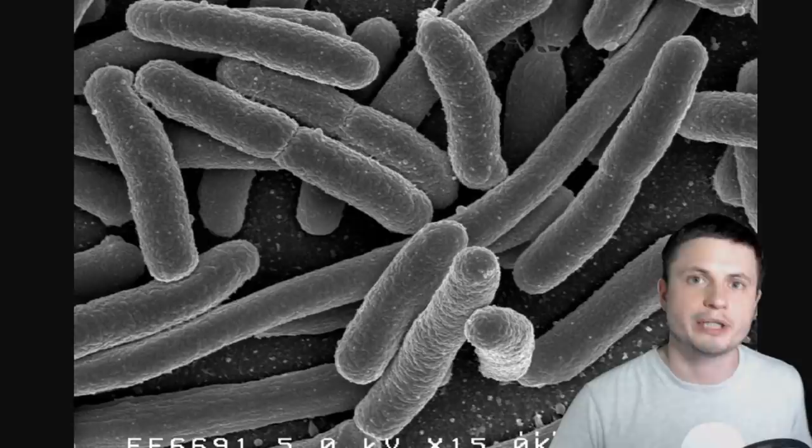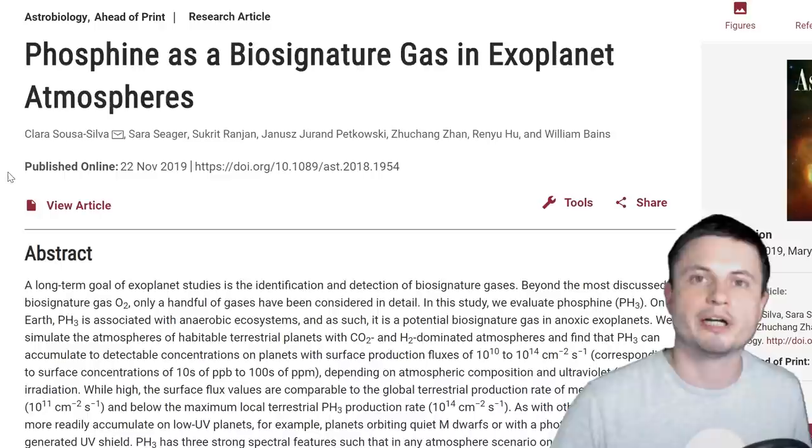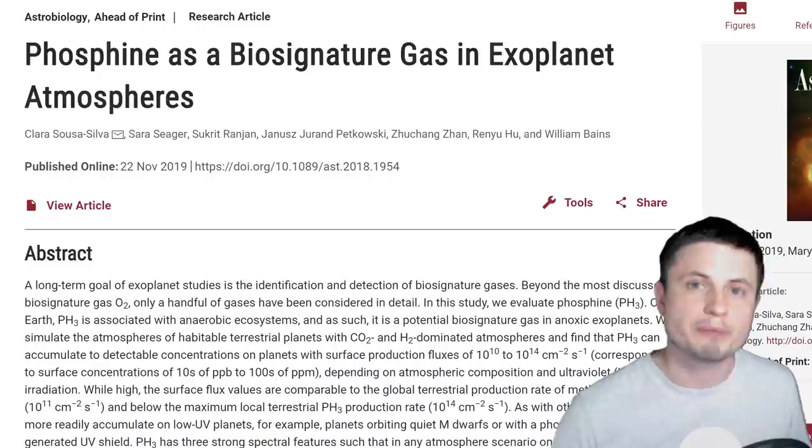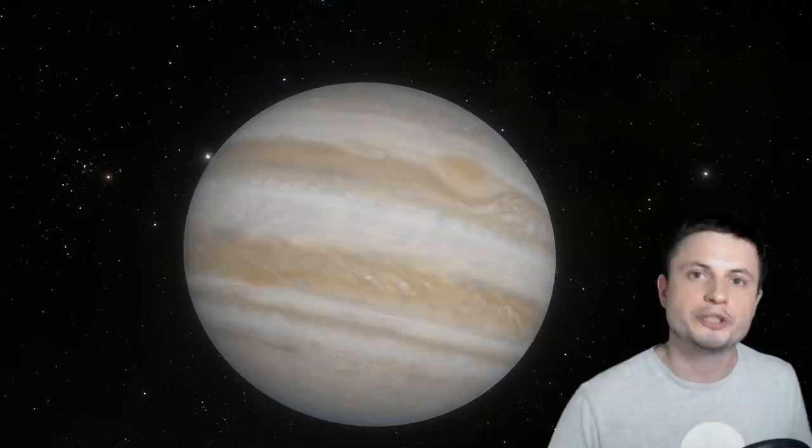And the MIT researchers specifically Clara Sousa Silva who was the main researcher behind the study essentially tried to create this in any way possible. They actually analyzed this gas in many different ways and she even studied this very thoroughly for about 10 years. And in all of her discoveries she discovered that there were only two major ways this gas is produced in the galaxy.